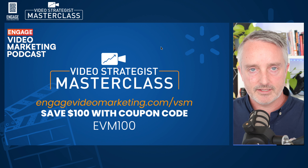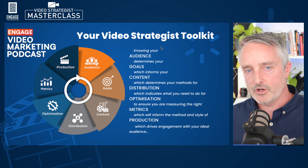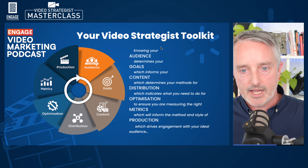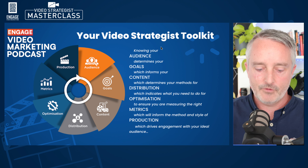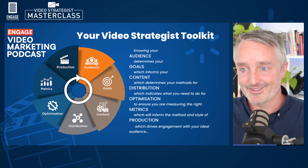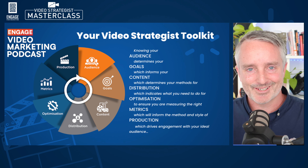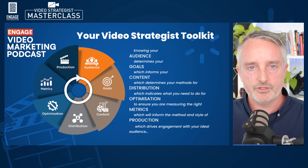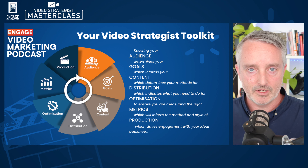We're coming back in the next episode with episode three of this seven-part series, looking at content. So we understand the audience, we've established the goals, and then the third stage is content — which is really about what you're actually communicating. What are you saying in the videos? What's the content being communicated within the particular strategic videos that you're executing?